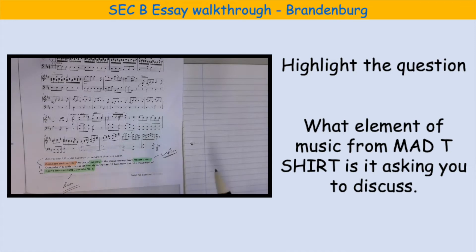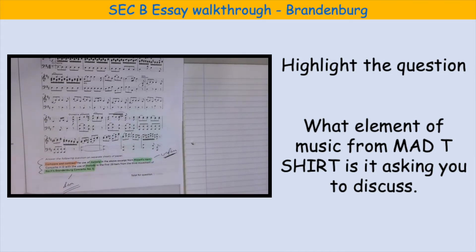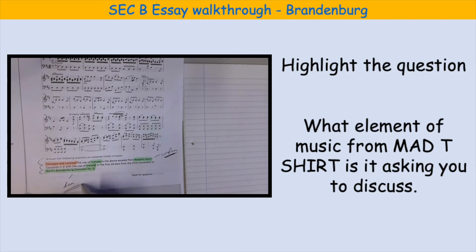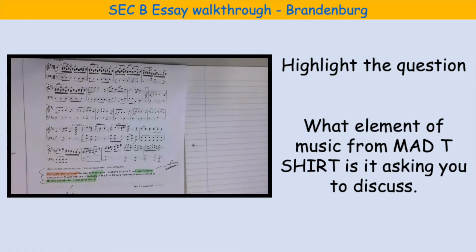Mozart's Horn Concerto is the unfamiliar piece — the one that we don't know. With the use of melody, the same element for both of them, in the first 29 bars from Bach's Brandenburg Concerto third movement. That is our familiar one — the one that we know.